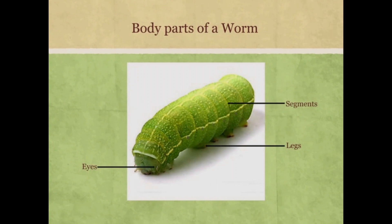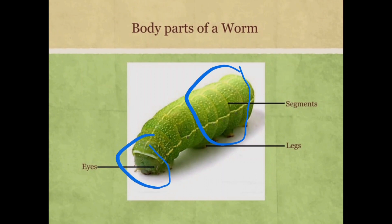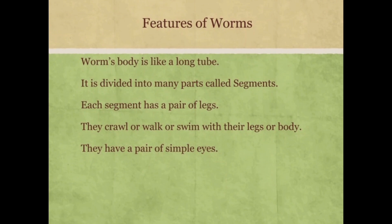A worm's body is like a long tube and is divided into many parts called segments. Each segment contains a pair of legs. The worms use their legs for moving forward and their eyes to see. They can crawl, walk or swim with their legs or body. They have a pair of simple eyes.